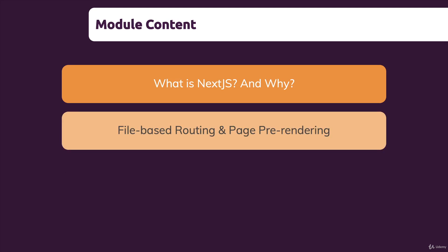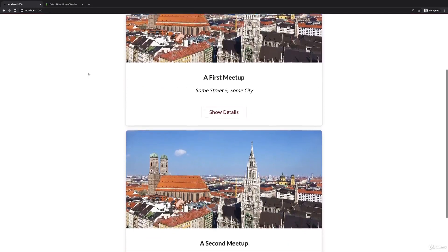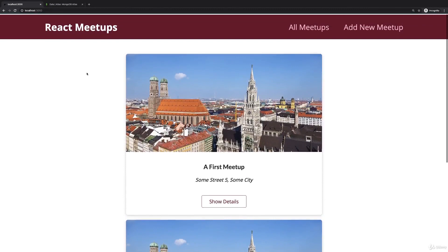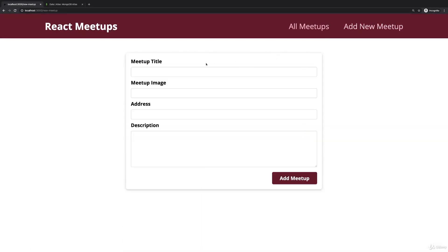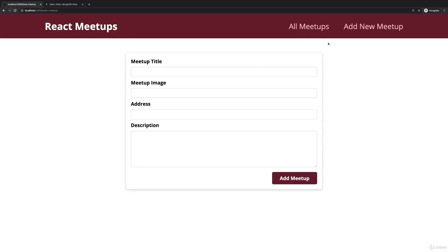We're also going to learn how we can build full-stack applications with Next.js by adding an API to our project and by adding data fetching to pre-render pages with data. We're going to see many small examples and an example project — a meetups project — where we render a list of meetups, can add meetups, display individual meetup data, and where that data will be stored in an actual database. We will also write the code for communicating with that database.